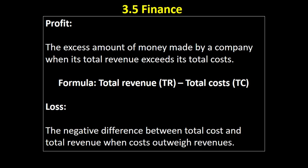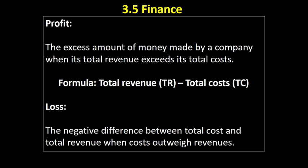Finally, profit. Profit can be defined as the excess amount of money made by a company when total revenue exceeds total costs. The formula is: total revenue minus total costs. If the revenue is greater than the cost, we've made a profit. Of course, sometimes costs outweigh revenue, in which case we've made a loss — the negative difference between total costs and total revenue when total costs are greater than total revenue. Make sure you know the definitions and formulas for each of these key terms.